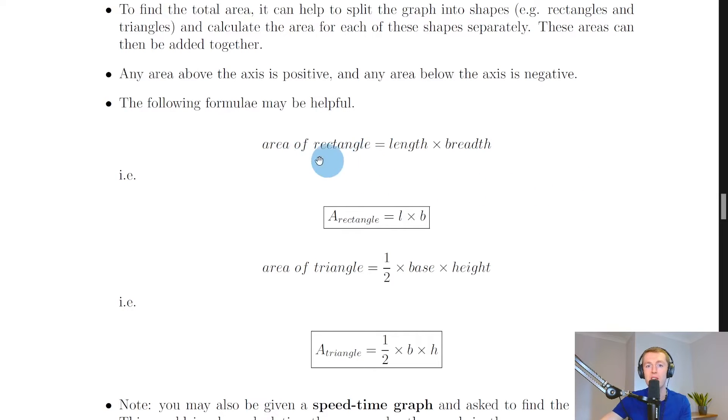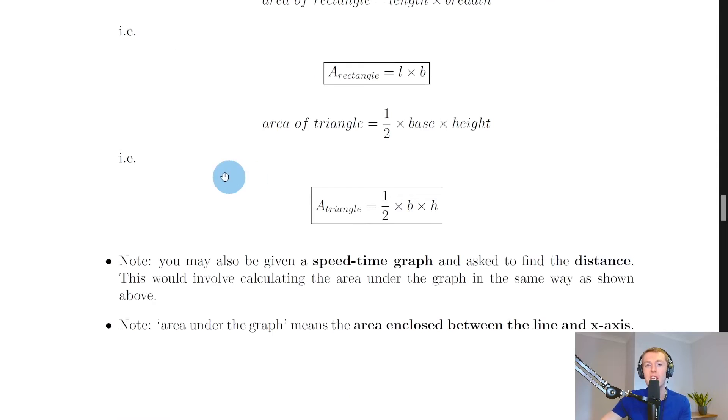To find the area of a rectangle remember we've got length times breadth so you can remember area of a rectangle equals l times b or length times breadth. The area of a triangle you should know from maths is a half times base times height or a half times length times breadth whichever way you were taught it. So you can remember area of a triangle equals a half times b times h or a half times l times b.